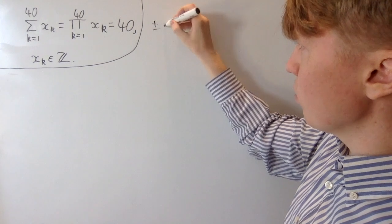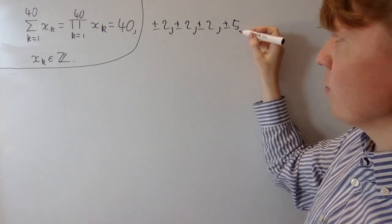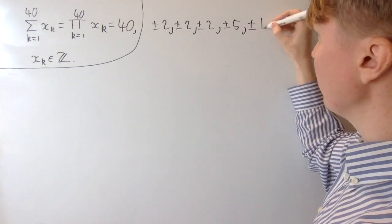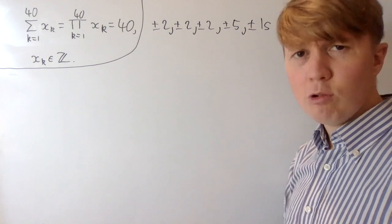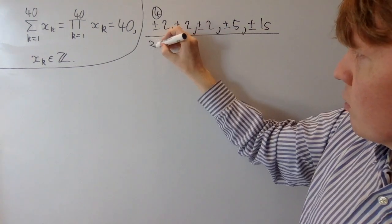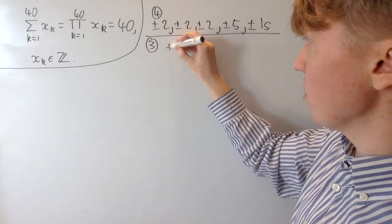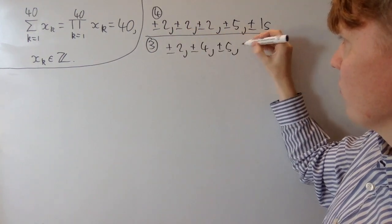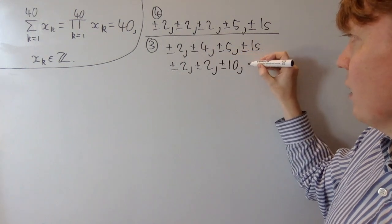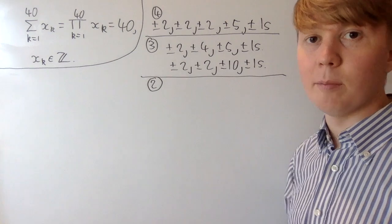One way of doing this is with some ±2s and a 5. So if we use 2, 2, 2, and 5, we get 40 as our product, which means the rest of our integers have to be ±1s. This is the most interesting way with the fewest 1s — 4 integers which aren't ±1s. We can also look at all the ways of doing this with 3 non-±1s: we could group two 2s to make a 4, or group a 2 and a 5 to make a 10, giving us ±2, ±4, ±5 with ±1s, or ±2, ±2, ±10 with ±1s.